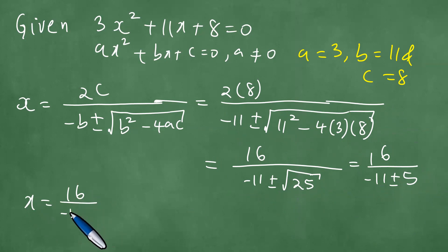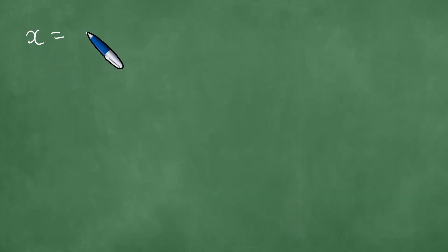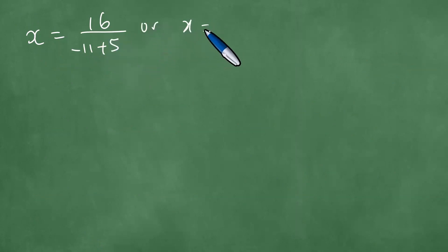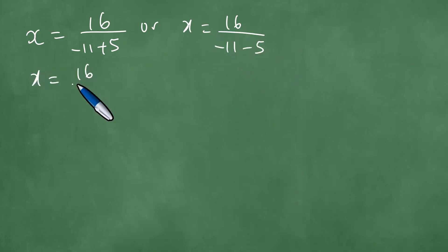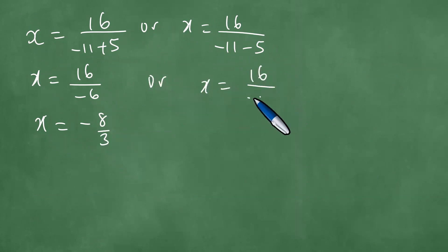We have x equals 16 over minus 11 plus 5, or x equals 16 over minus 11 minus 5. This gives x equals 16 over minus 6, and dividing top and bottom by 2 gives x equals minus 8 over 3. For the other case, x equals 16 over minus 16, which means x equals minus 1.